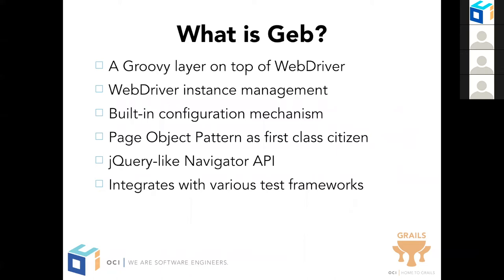The page object pattern helps you write maintainable tests by having an established way to encapsulate page content. The next bit about Geb is it comes with a Navigator API, which is jQuery-like — not exactly like jQuery, but jQuery-like. You use the Navigator API to select and interact with DOM elements on the page using CSS selectors. You can think of a Navigator as a wrapper around DOM elements, similar to what a jQuery object is.